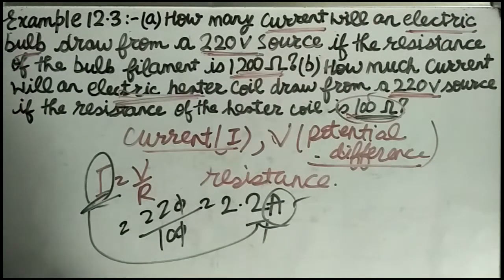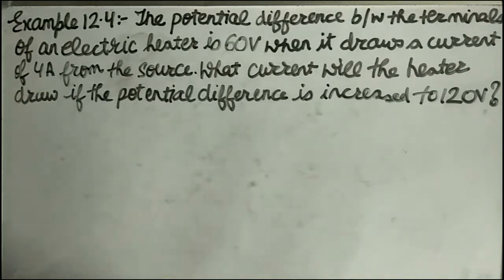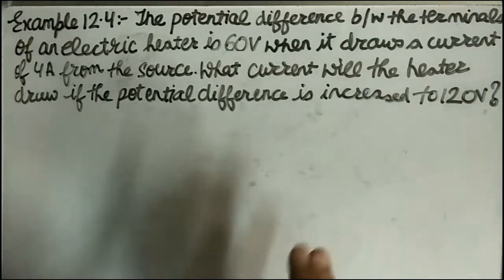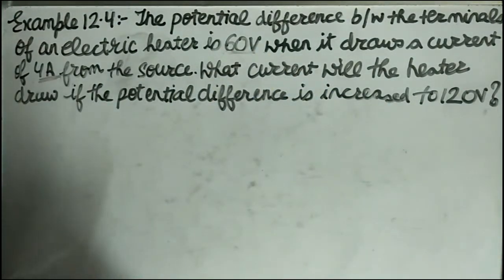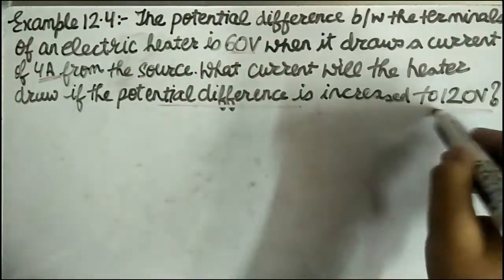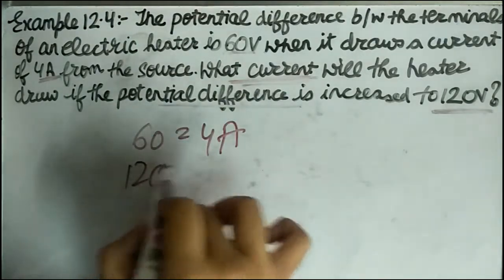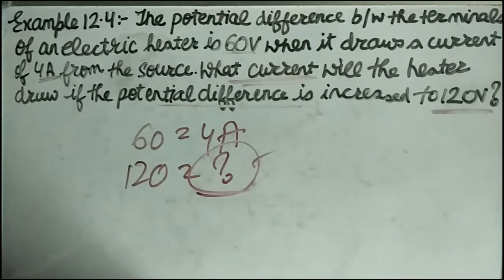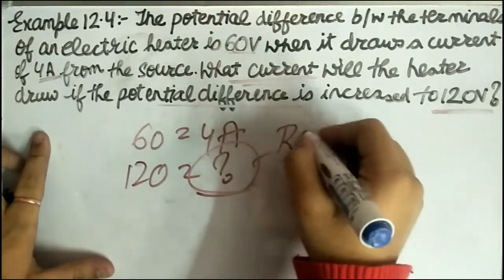Example 12.4: The potential difference between the terminals of an electric heater is 60 volt when it draws a current of 4 ampere from the source. What current will the heater draw if the potential difference is increased to 120 volt? So at 60 volt the current is 4 ampere, and at 120 volt we need to find the current.